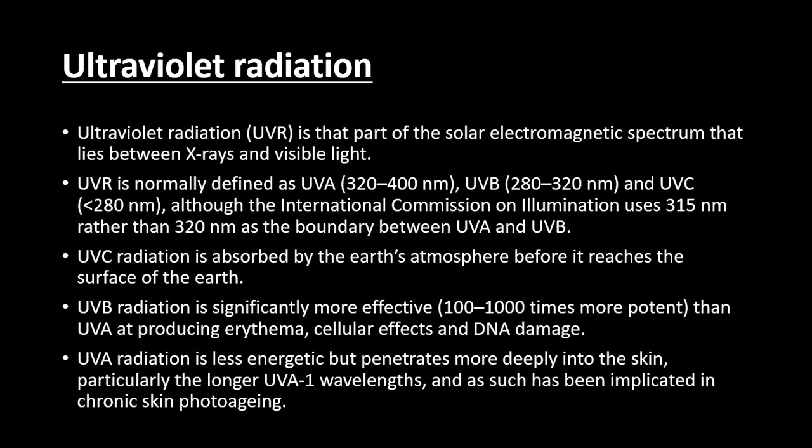Before I start my lecture, let's discuss what ultraviolet radiations are. Ultraviolet radiation is that part of the solar electromagnetic spectrum that lies between x-rays and visible light. Ultraviolet radiations are basically non-ionizing radiations. There are three kinds: ultraviolet A, ultraviolet B, and ultraviolet C. Ultraviolet A comprises wavelengths between 320 to 400 nanometers. Beyond 400 nanometers, the visible light starts.